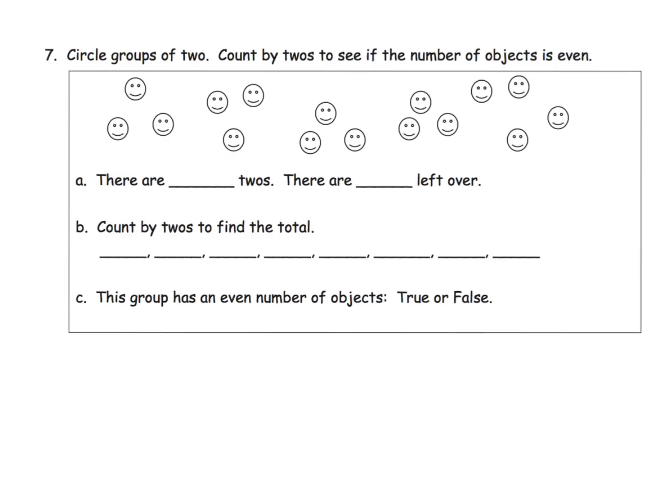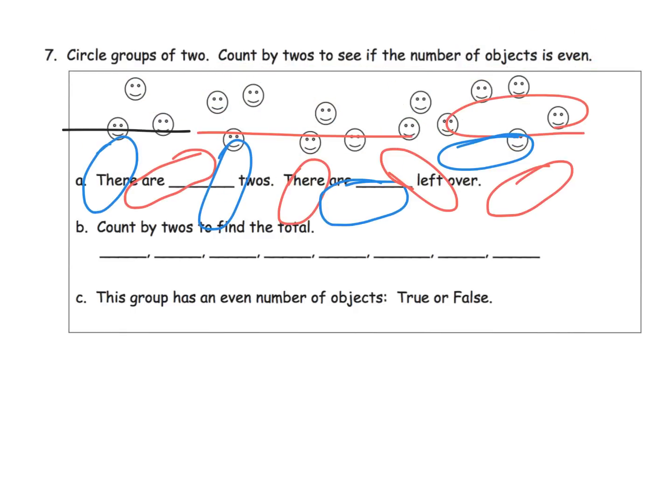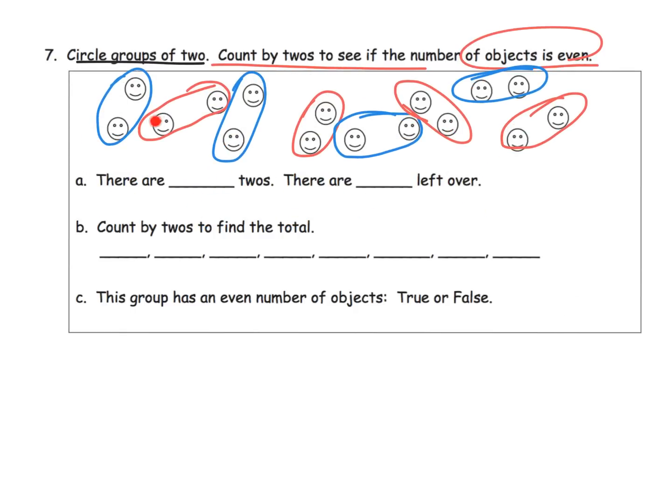The last slide for this video, we're going to circle in groups of two and then count by twos to see if the number of objects is even. Let's put our little groups of two. There's a group of two, there's a group of two, here's a group of two, here's a group of two. There is a group of two, group of two, group of two, and lastly a group of two. Everybody has a partner.